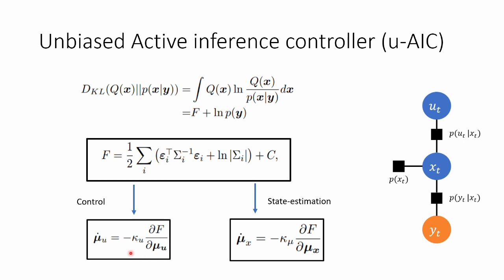And also mu of u rather than just u. Why is that? Because previously u, the control action, was just a variable, but now it's a random variable. So we compute a distribution over it. And the mean of the distribution, of the Gaussian distribution, is mu of u.